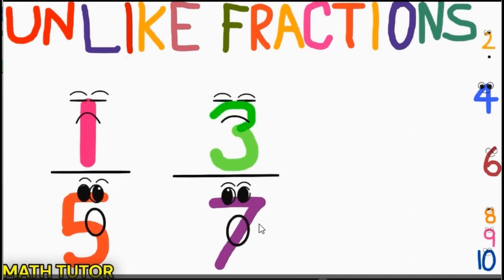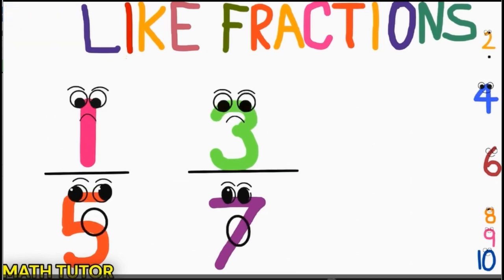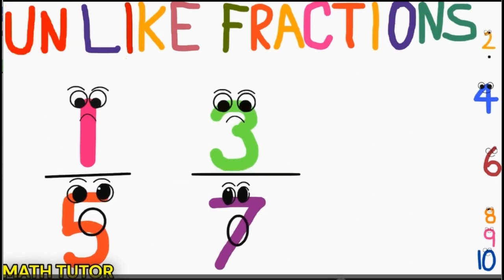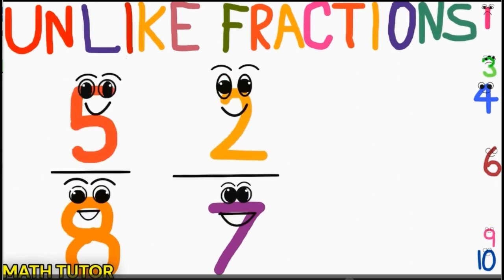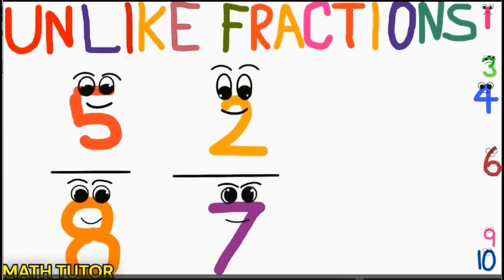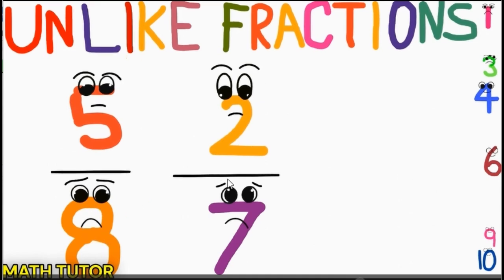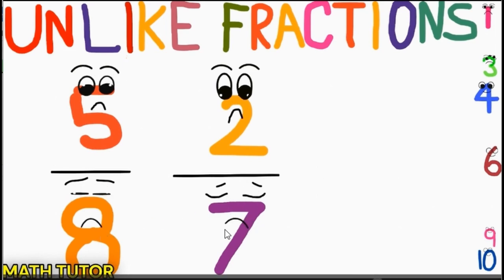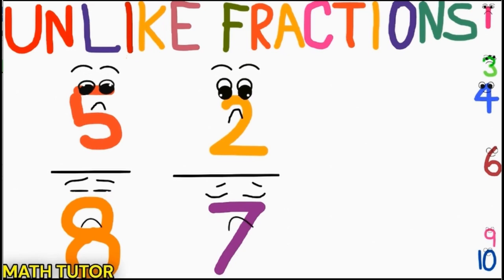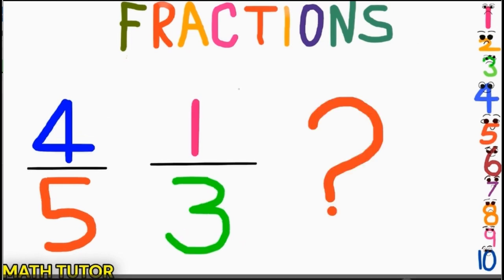One more example: 5/8 and 2/7. Here, for the first fraction 8 is the denominator, and for the second fraction it is 7. The denominators are different, meaning it is an unlike fraction.